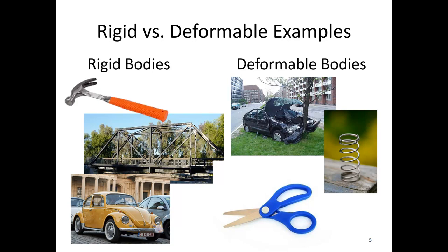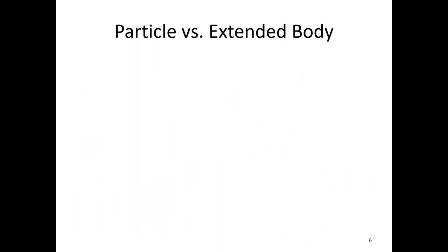Going back to our scissors example: each individual piece of the scissors — piece one, piece two, and the rivet — I might treat as rigid. But the scissors as a whole are definitely not rigid; they're not really stretching, they're simply put together in a way that is not rigid. This is an important distinction: treating something as a rigid body generally gives a simpler analysis, while treating it as a deformable body will be a more complex analysis.